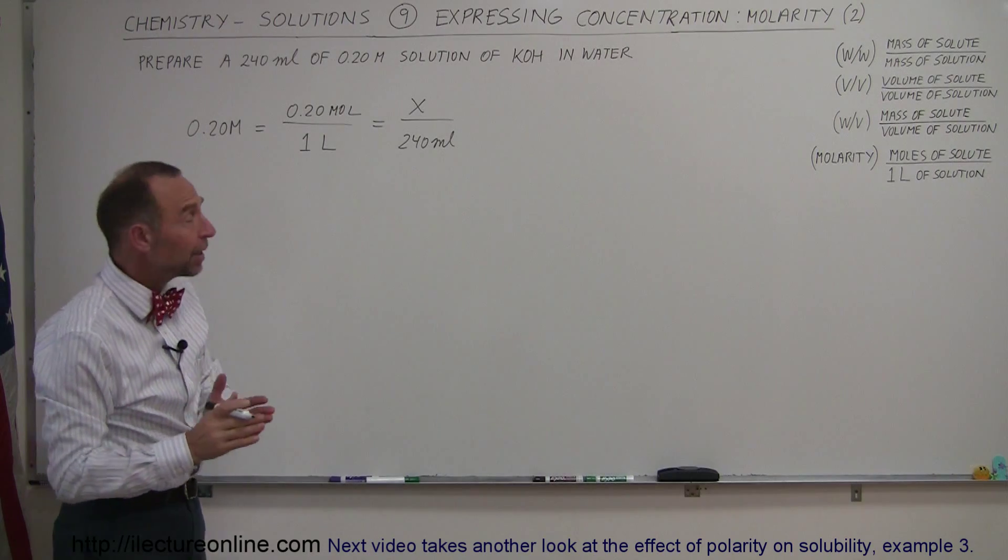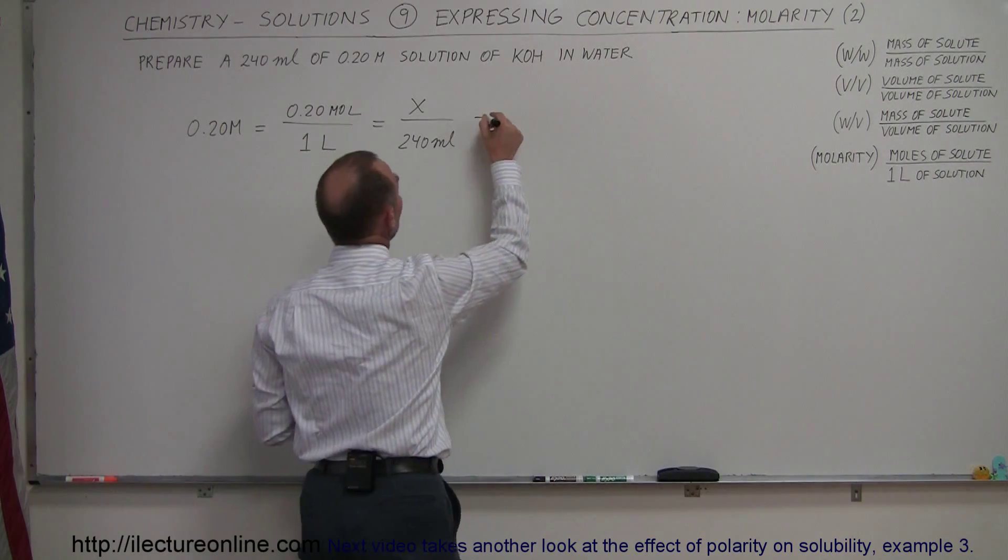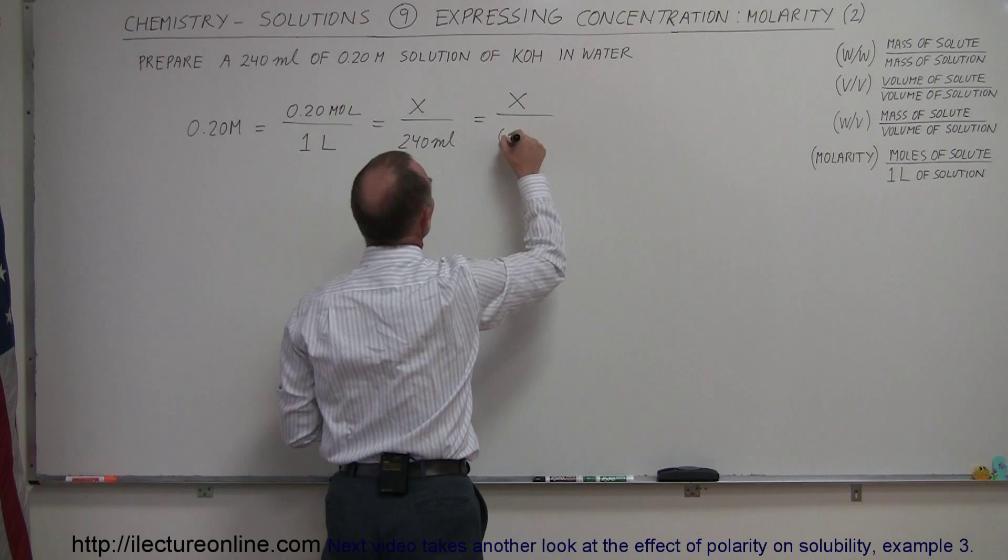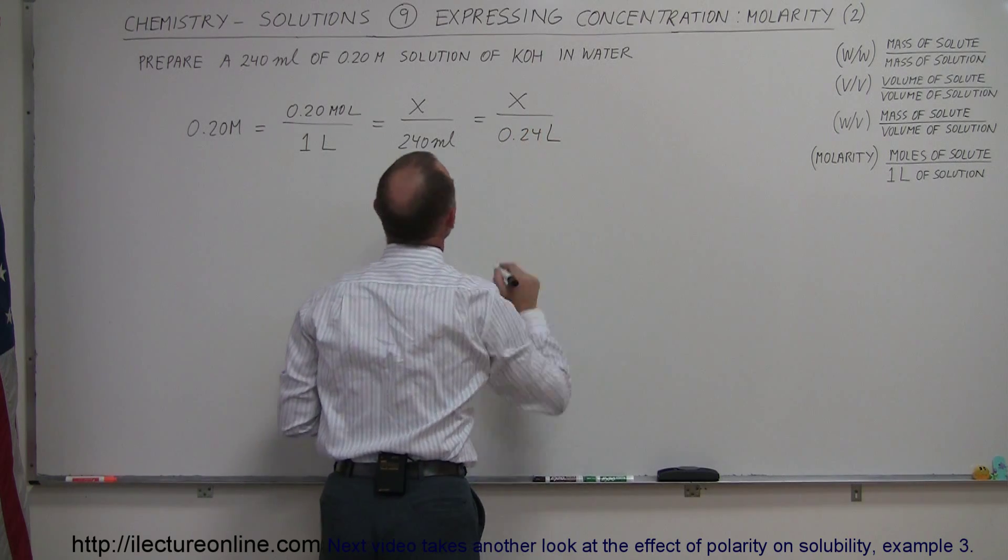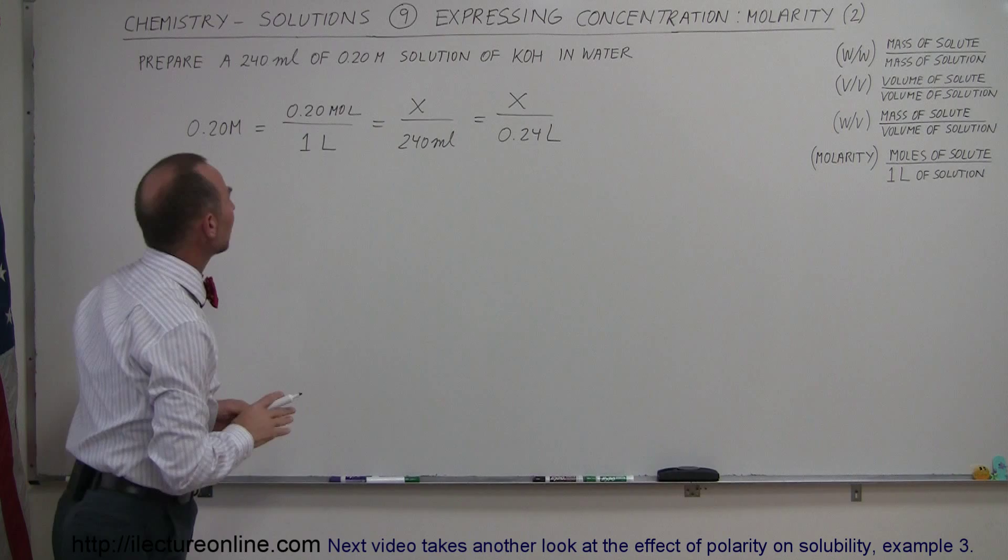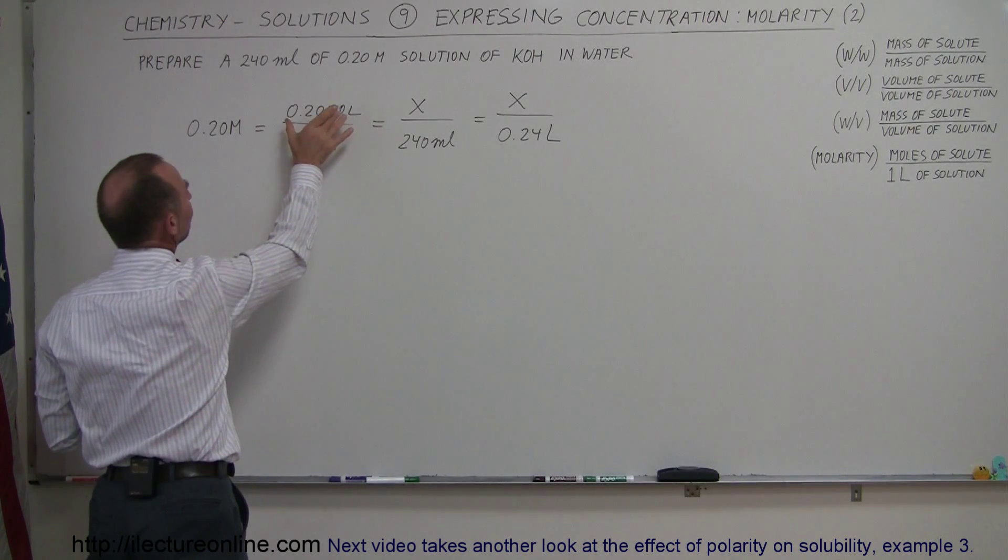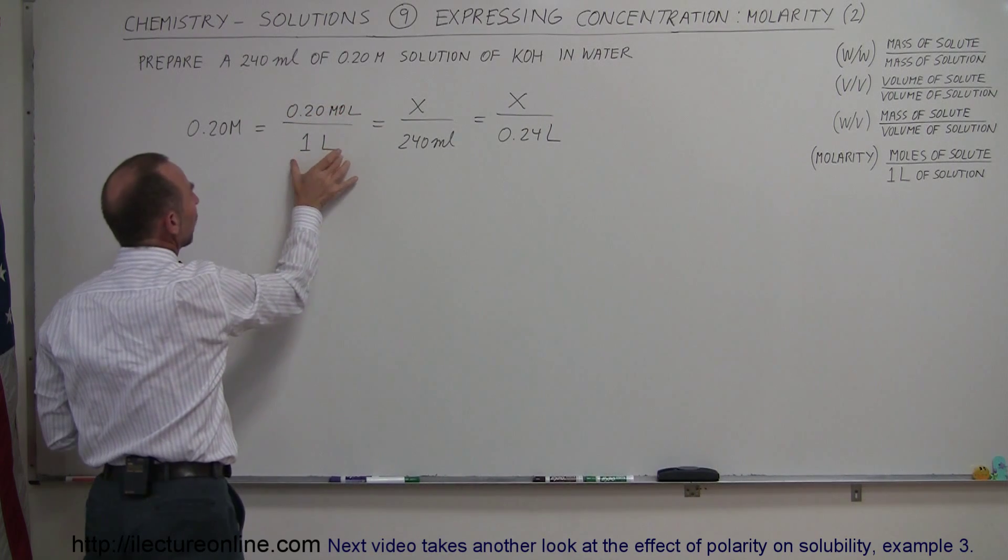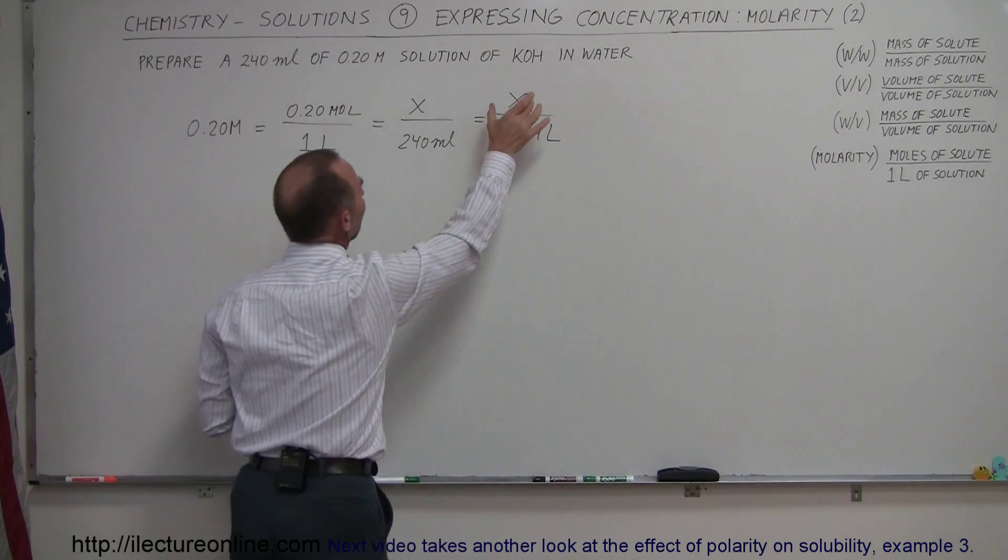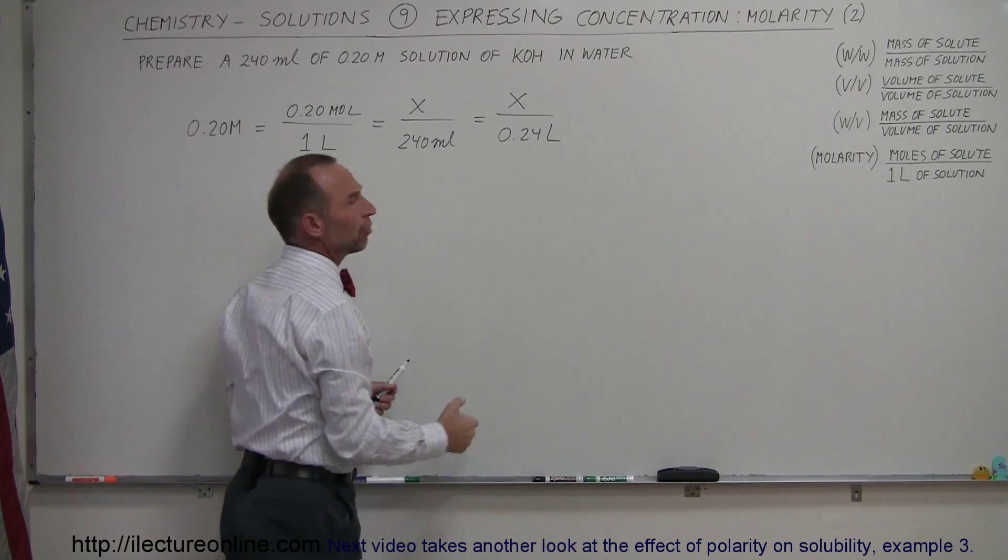And of course, since there's 1,000 milliliters in a liter, this can be written as X divided by 0.24 liters. So now what we see is we want to convert from 0.2 molar or 0.2 moles of solute to 1 liter of solution to X number of moles to 0.24 liter solution.